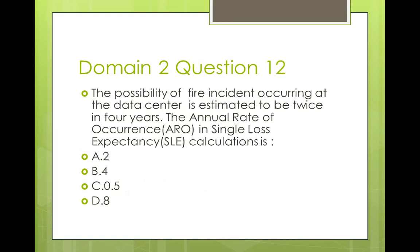Question twelve: the possibility of a fire incident occurring at the data center is estimated to be twice in four years. The annual rate of occurrence (ARO) in a single loss expectancy calculation is? To calculate ARO, divide the number of events by the number of years: two events over four years equals 0.5. So the answer here is C — 0.5. Remember, annual rate of occurrence is simply the frequency: the number of times an event will happen over the number of years you are looking at.